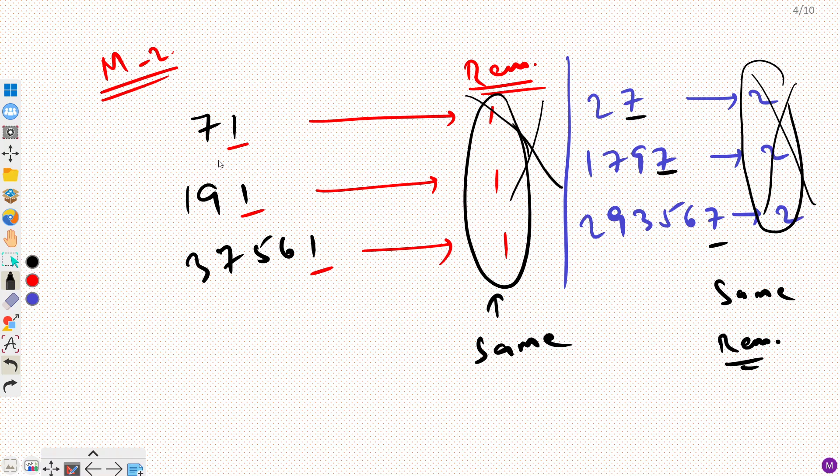The property over here is that when you divide two numbers by 5 and if they have same unit digit then you are going to get same remainder. That is the property right.